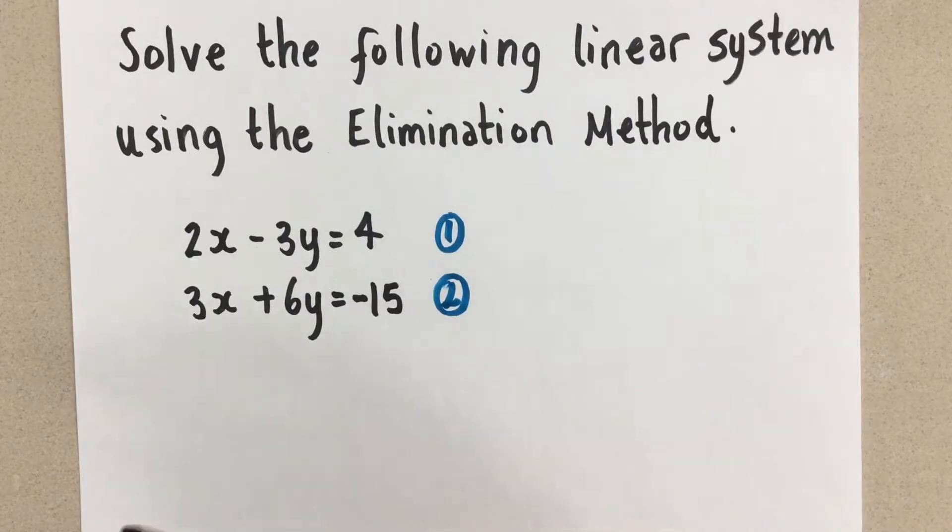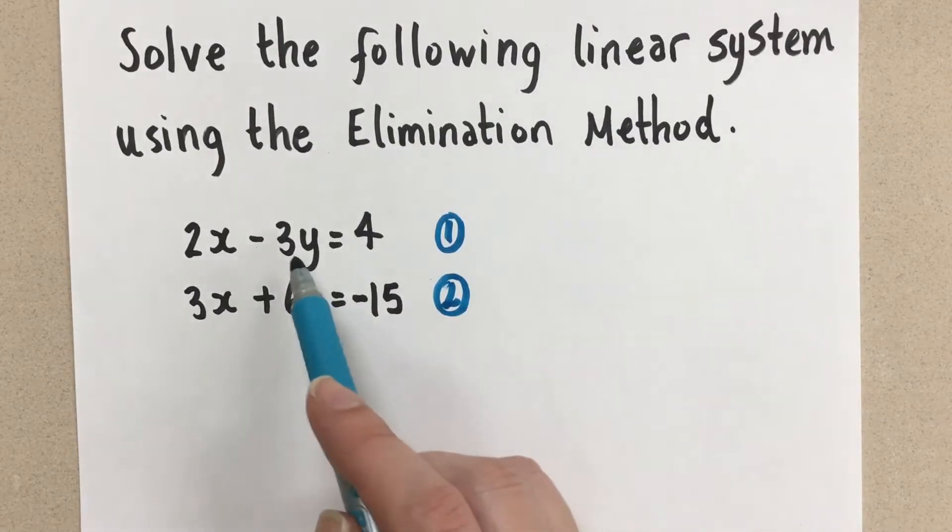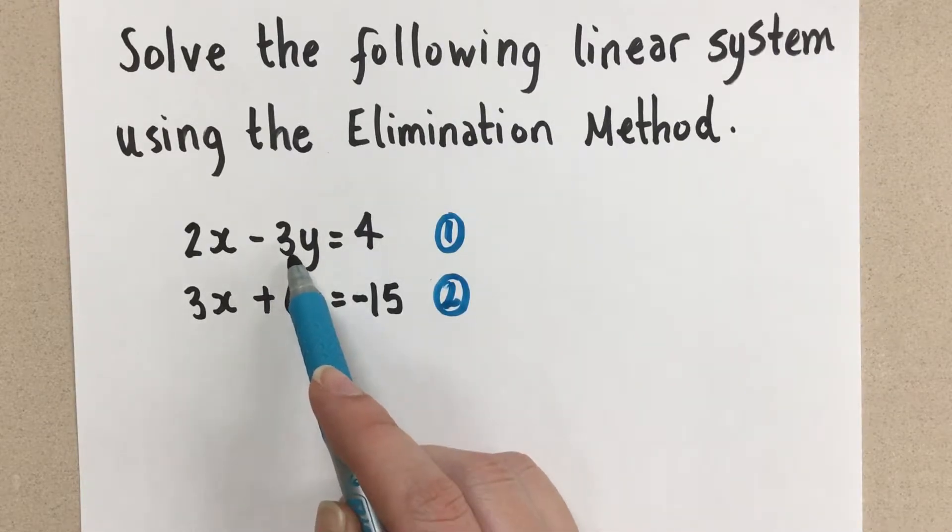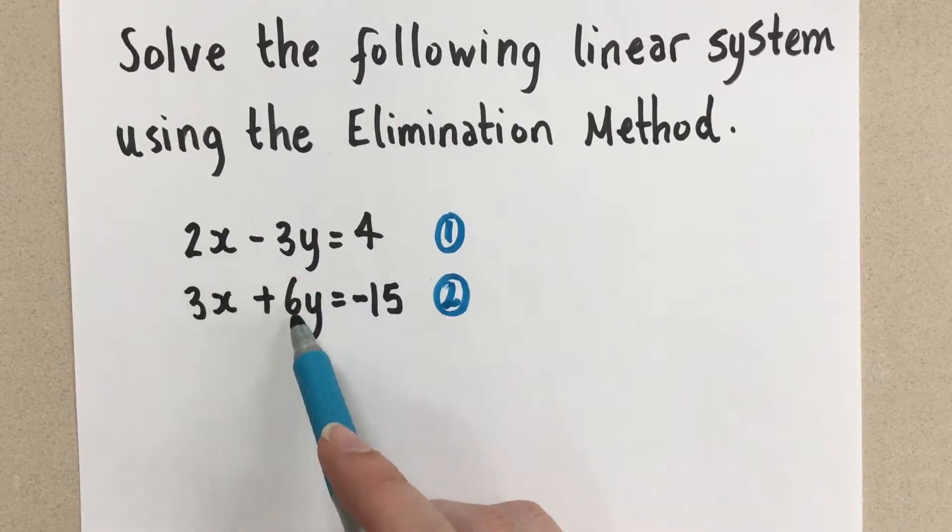So if you think about your multiples for numbers, we see that the 3 and the 6 are multiples of each other. So if I take the 3 and I multiply it by 2, then I'm going to have a 6 here and a 6 here. So let's do that.